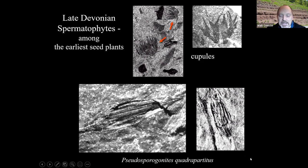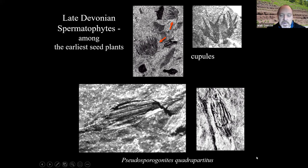The Red Hill specimens prompted an amalgamation of specimens from Belgium and the UK. Three of us co-wrote the paper, led by the Belgian author Cyril Prestiani, who saw the similarities amongst the specimens from Red Hill, Belgium, and the UK and gave them all one name. It's not too surprising that the flora at Red Hill is very similar to the flora in Belgium and the UK, because it was just across the mountains at that point.